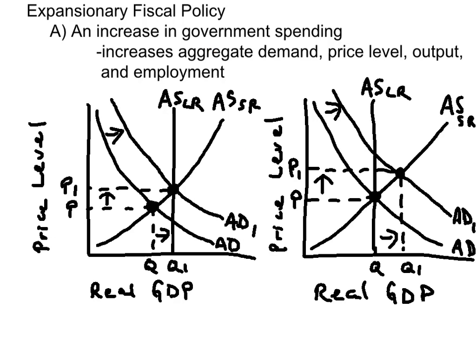One tool of an expansionary fiscal policy is an increase in government spending. When the government increases spending, that will raise aggregate demand, the price level, real GDP, and employment.